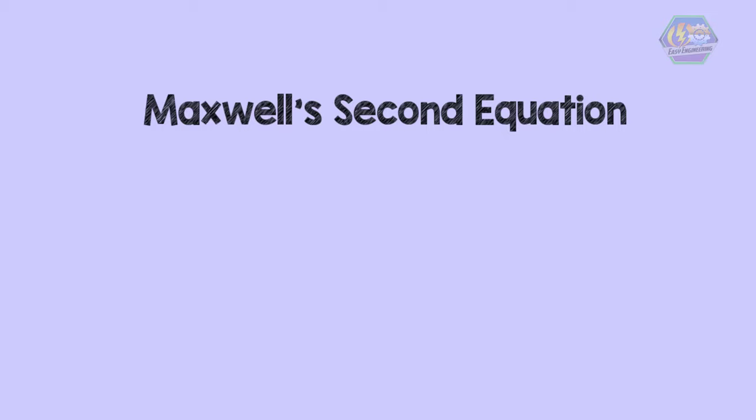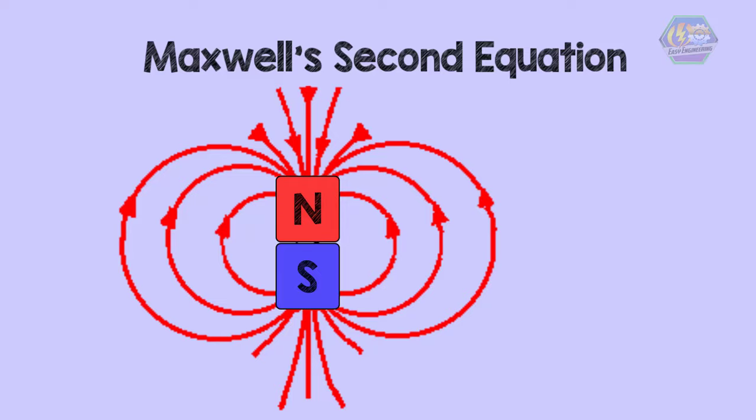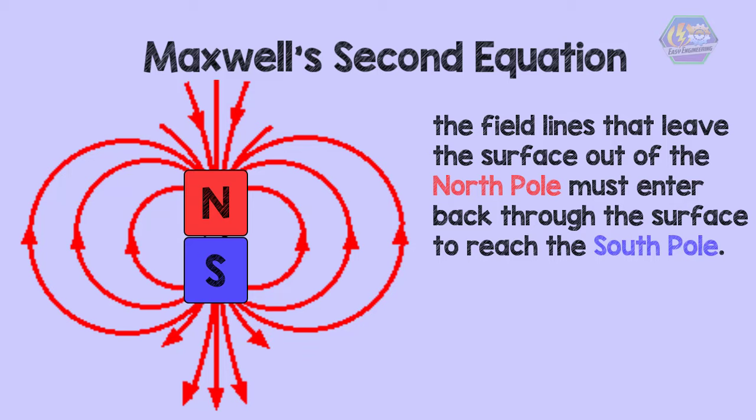The magnetic field lines leave from the north pole and return back to the south pole. But when you're looking at how magnetic field interacts with a surrounding surface, you see that the field lines that leave the surface out of the north pole must enter back through the surface to reach the south pole. This results in the overall magnetic flux being zero.